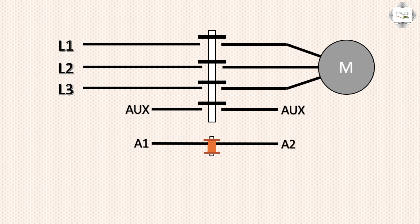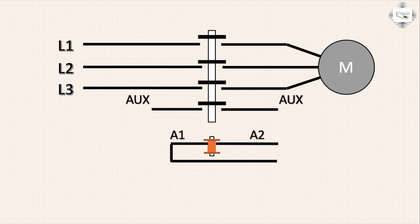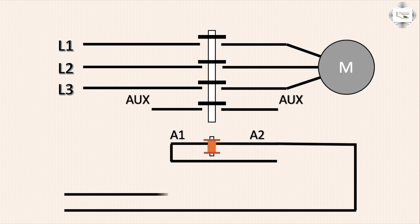A1 and A2 terminals are the contactor coil connection. Contactor coil voltage is 220V. Neutral connection goes to A2, and phase for switching.